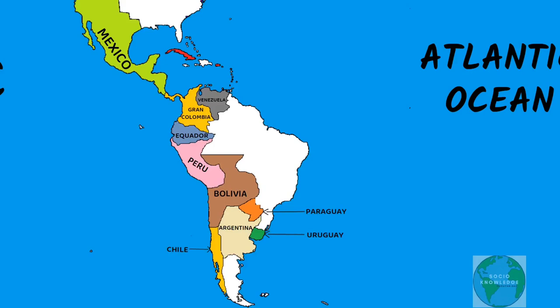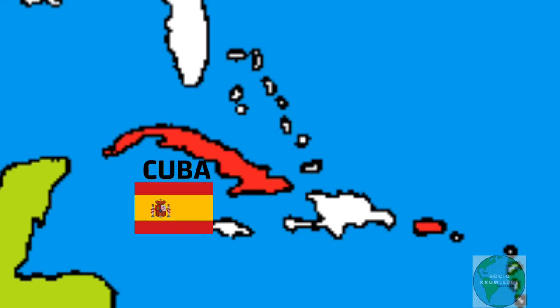Finally, by 1833, Spain lost all of its American colonies. It only had Cuba, Puerto Rico in the Caribbean, and the Philippines and Guam in the Pacific.